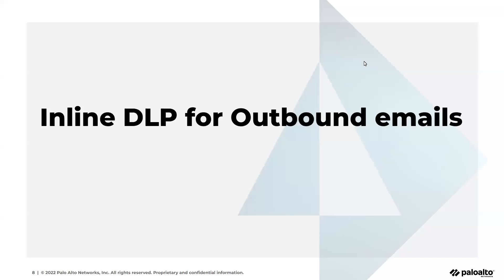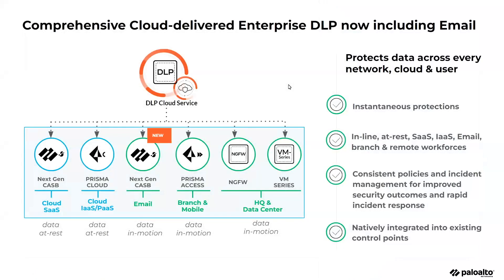For this session, I'm going to be talking to you about a new vector of data loss that Palo Alto Networks has covered in inline email DLP. As you can see, there are many vectors of data loss — from the cloud, to SaaS, to your network, and now the major one in terms of email.